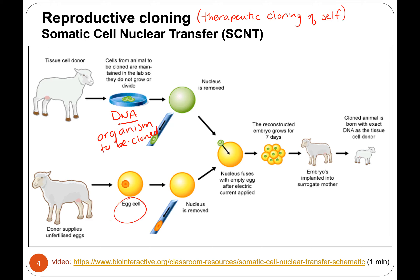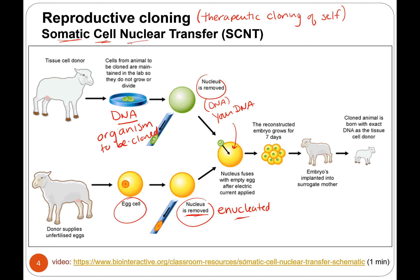You need an egg. You remove the nucleus from the egg — it's called enucleated. You take the whole nucleus (not just the DNA because it's too fragile) and put it into that enucleated egg. So it's your DNA into an egg — that somatic cell, your body cell, nuclear transfer — we're transferring the nucleus. Then the idea is that you can grow an embryo, and if you're doing reproductive cloning, you would put that into a surrogate mom and get a cloned animal with the exact same DNA as the donor.